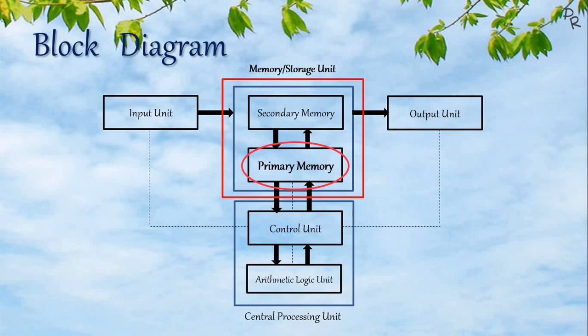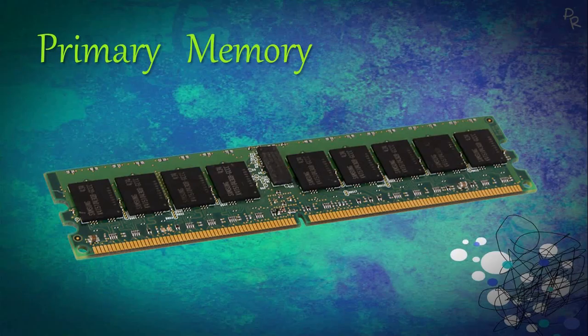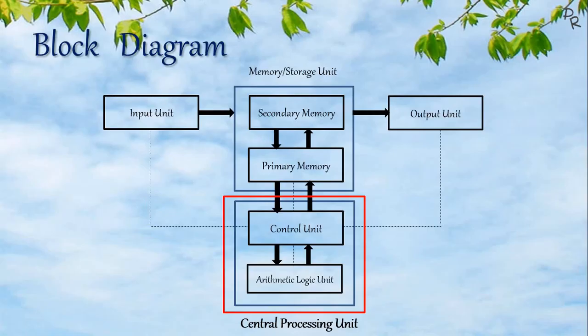The primary memory is a temporary memory — the data and instructions are not saved for a longer period of time. The data gets erased when the computer is turned off, hence it is also known as volatile memory. RAM is the primary memory.